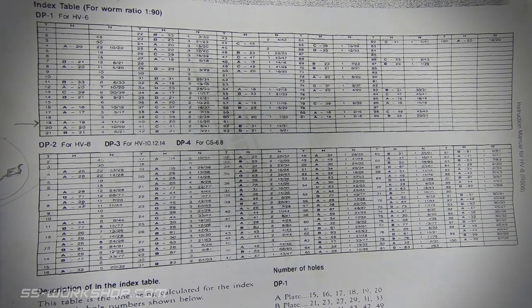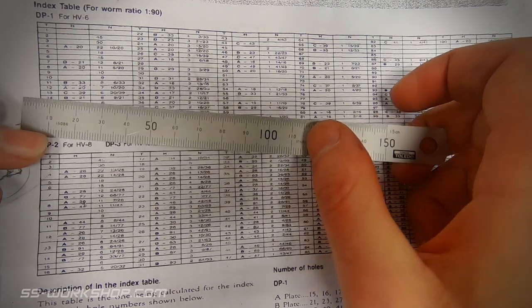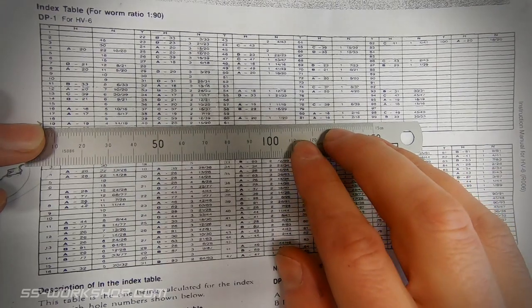Before we continue with the install we need to know which dividing plate we're going to install. For this we'll need the indexing table which is specific to the rotary table depending on the worm gear ratio.